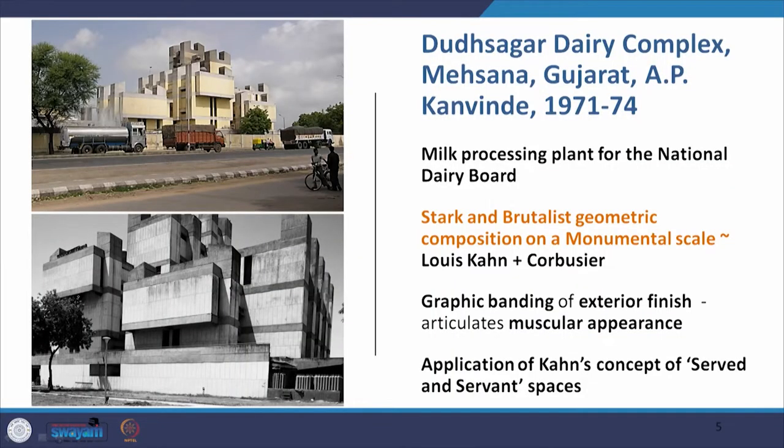It is a very stark and brutalistic geometrical composition on a monumental scale. When we talk of stark and monumental, we are reminded of Kahn. When we talk of geometric composition, we are reminded of Kahn. When it is brutalist, we are reminded of Corbusier. Geometric is also a remembrance of Corbusier when we look at the Capital Complex in Chandigarh. There is a graphic banding in the exterior finish which articulates a very muscular, robust building. There is also the application of the concept of servant and served spaces of Louis Kahn.